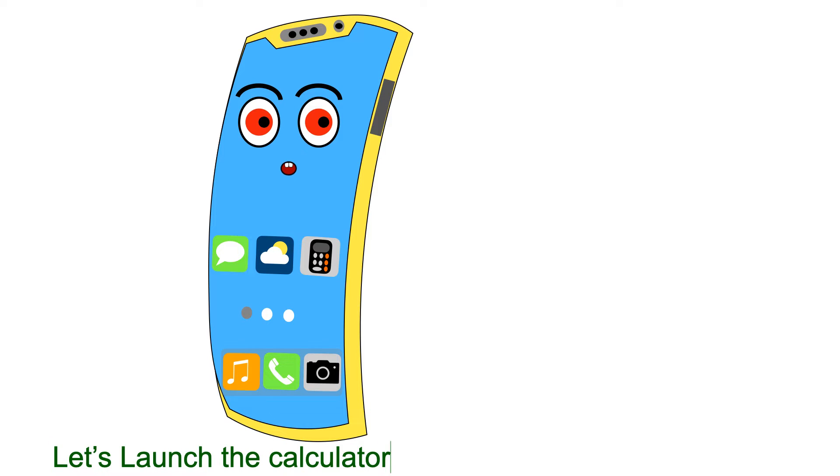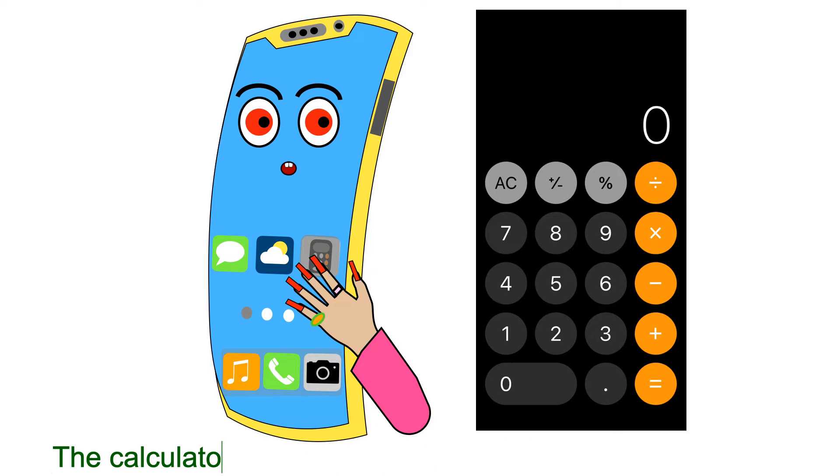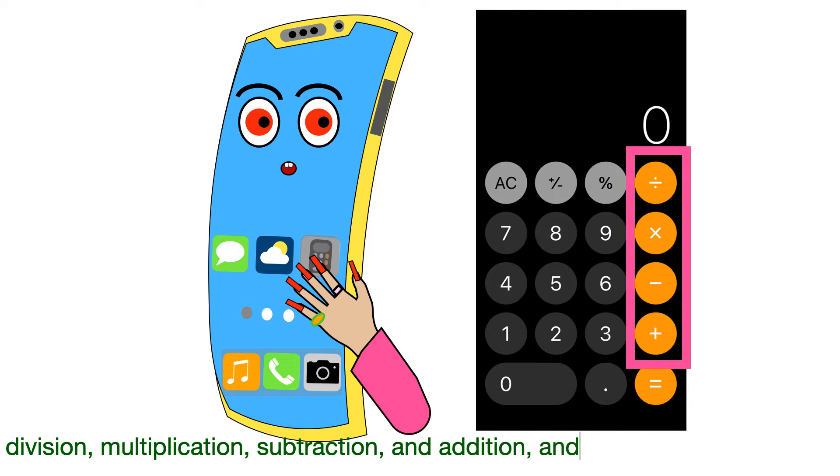Let's launch the calculator app located on your iPhone. The calculator app on your iPhone is really two calculators. One is a basic calculator where you do division, multiplication, subtraction, and addition, and calculate percentages.